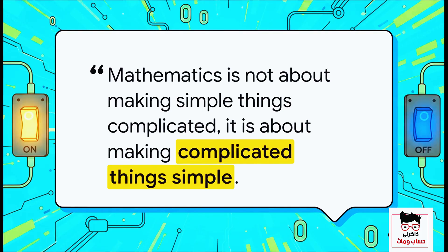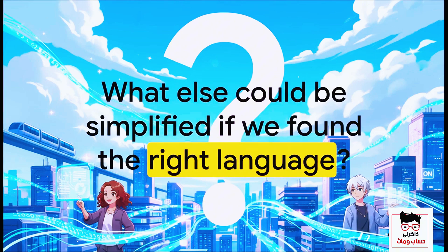The mathematician S. Scudder said, 'Mathematics is not about making simple things complicated, it is about making complicated things simple.' And binary is the ultimate proof of that idea. We took the messy, chaotic world of electronics and found the simplest possible mathematical language to describe it and bring order to it. We used math to turn the chaos of electricity into pure logic. So what other really complex, messy parts of our world are just out there waiting for us to find the right simple language to finally make them clear? Thanks for joining me for this one.